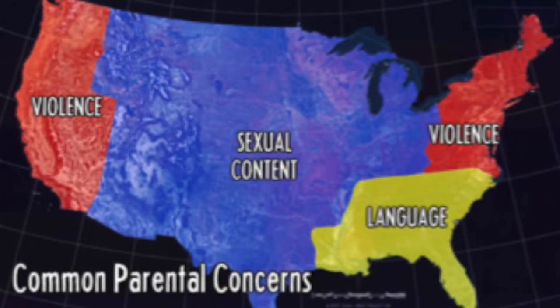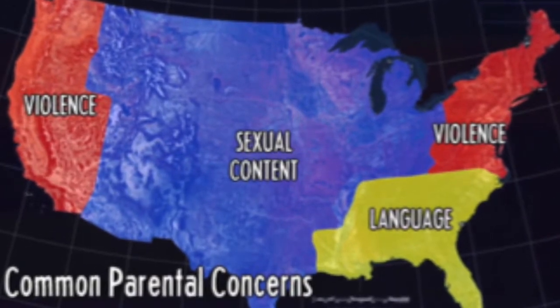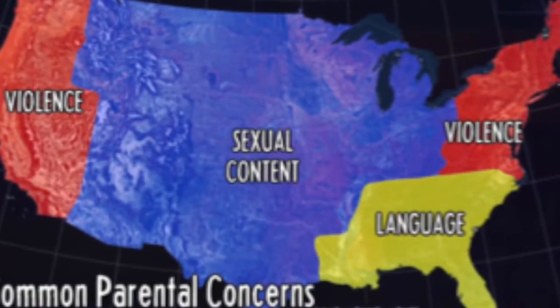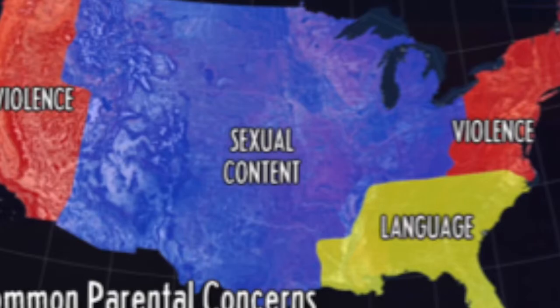Although the MPAA tries to refrain from making specific rules pertaining to the rating system, they do admit to concentrating in specific areas. The MPAA takes a poll each year asking parents what issues they think are most concerning in films. This image is a chart which maps out what each section of the country is most concerned with. On the east and west coast there is a high concern for violence, while in the south it is language and sexual content in the midwest. This could explain why films in America are rated conservatively in regards to sexual content and language, while violence is seemingly more lax.